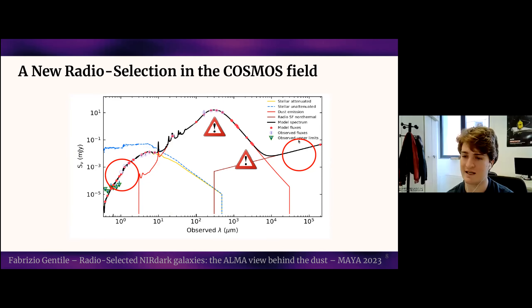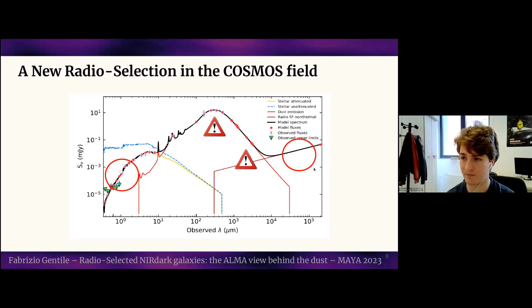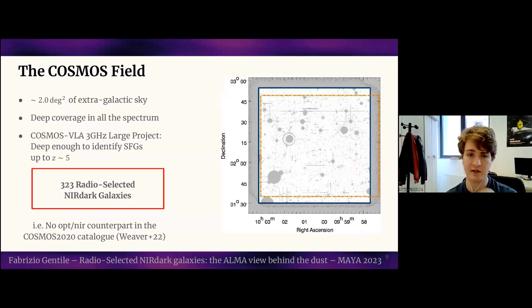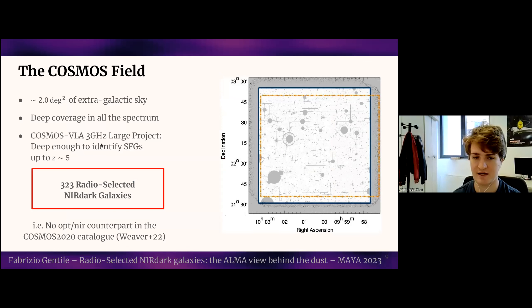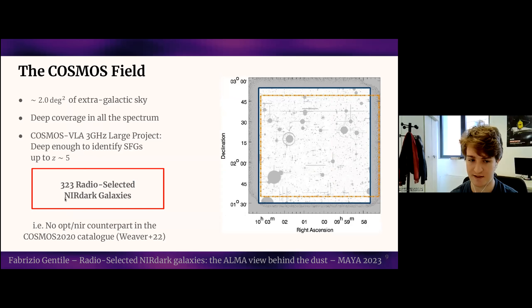With my group, we started to investigate longer wavelengths, searching for dusty star-forming galaxies in the radio, because radio is a good tracer of star formation and has the advantage of not being affected by dust. In particular, we focused on the COSMOS field and were able to select 323 sources — we call them radio-selected dark galaxies. These are galaxies detected at 3 GHz in the radio that lack an optical and infrared counterpart in the COSMOS 2020 catalog, which is the main catalog of the COSMOS field. The main task of my first year of PhD was to establish what is the nature of these sources.